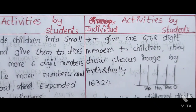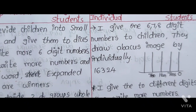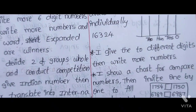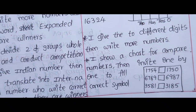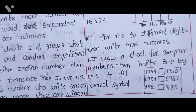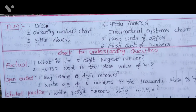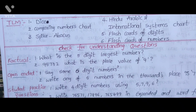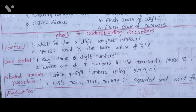Individual Activities: I give 1-, 6-, 7-, and 8-digit numbers to children; they draw Abacus images individually, one by one. I give 2 different digits and ask them to write more numbers. I show a comparison chart and invite students one by one to fill in the correct symbol. Teaching materials used include: Dice, Comparing Numbers Chart, Spike Abacus, Hindu-Arabic and International System Charts, Digit Flash Cards, and Number Flash Cards.